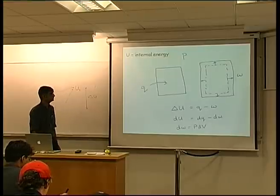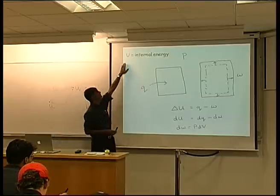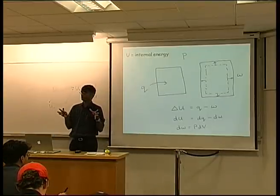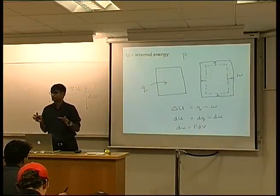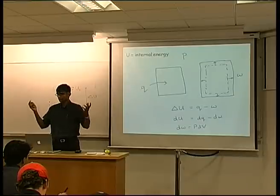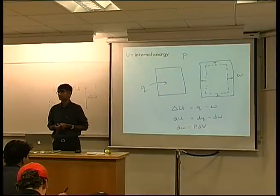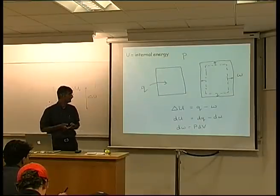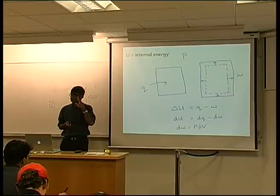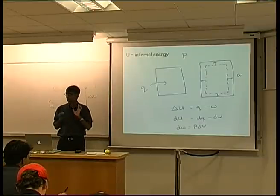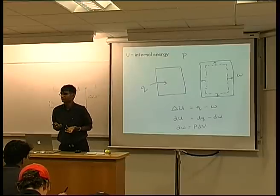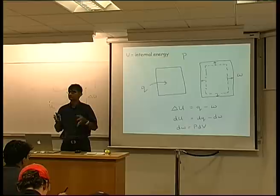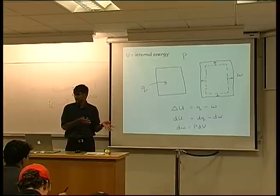In your notes, you find two kinds of U's. One is a bold font, which refers to the absolute value of the internal energy — for example, 500 joules. And there would be a capital U which is not bold, which is the amount of internal energy per mole of material.